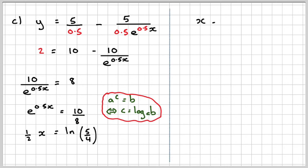Therefore, x will be 2 ln of 5 over 4, which is 0.4462, which gives me 0.446.